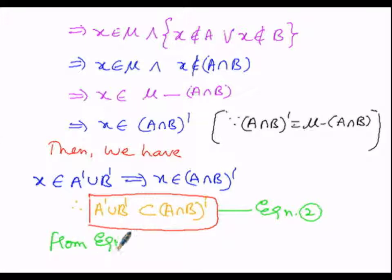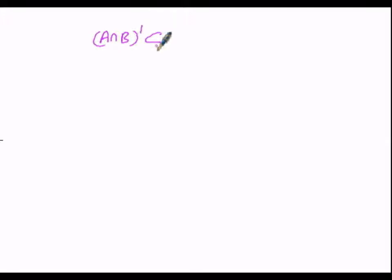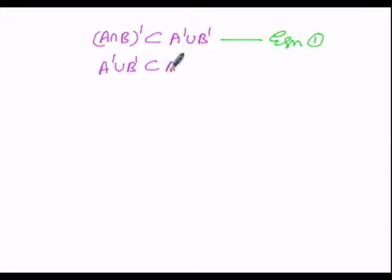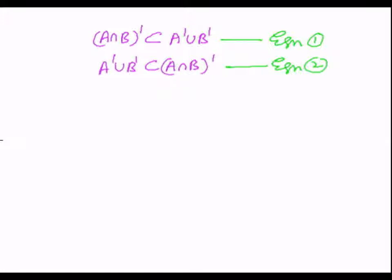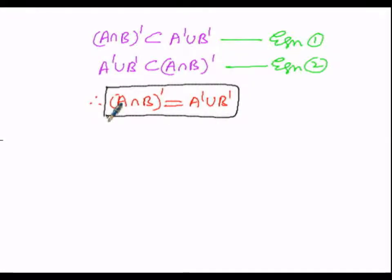From conditions 1 and 2: condition 1 states A intersection B whole complement is a subset of A complement union B complement, and condition 2 states A complement union B complement is a subset of A intersection B whole complement. Since LHS is a subset of RHS and RHS is a subset of LHS, they must be equal. Hence A intersection B whole complement equals A complement union B complement. In this manner we have proved De Morgan's second law.